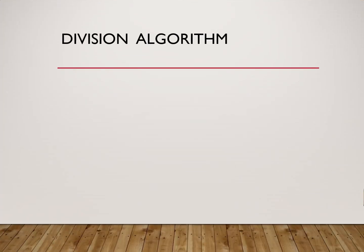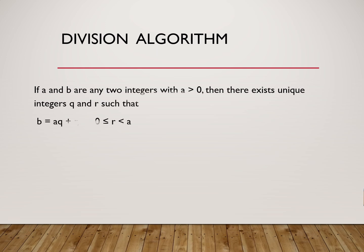First of all, what is the division algorithm? Its statement: if A and B are any two integers with A greater than 0, then there exists a unique integer Q and R so that we can write B is equal to AQ plus R, where R is the remainder, R less than divisor and greater than equal to 0. It is simply related with the division algorithm: dividend equals divisor into quotient plus remainder.